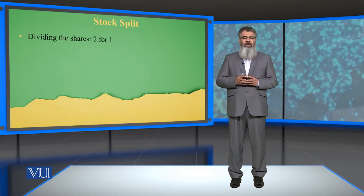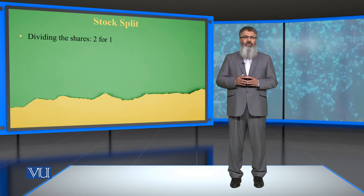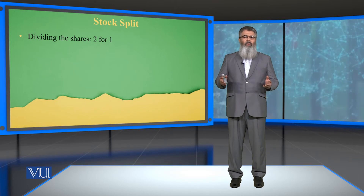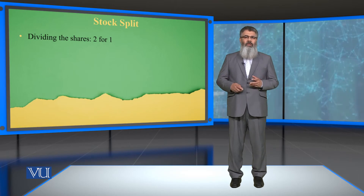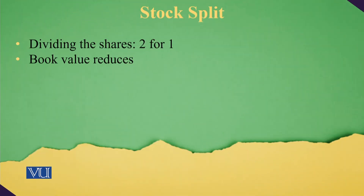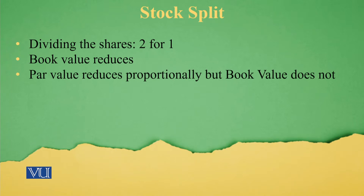So if we are splitting one share into two, that will be a two-for-one stock split. And likewise, we can split it into more number of shares. Now when a stock split takes place, the book value also reduces. We have seen that book value is our equity divided by the total number of shares.